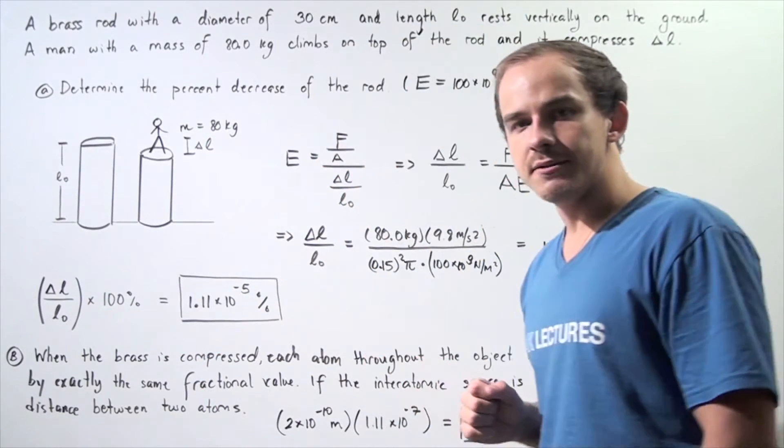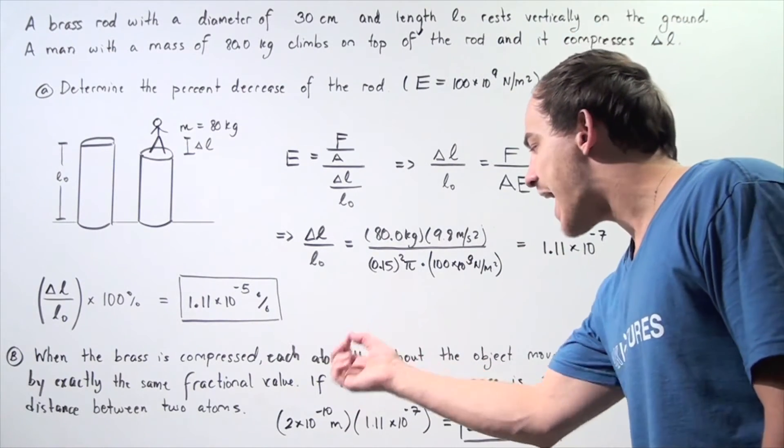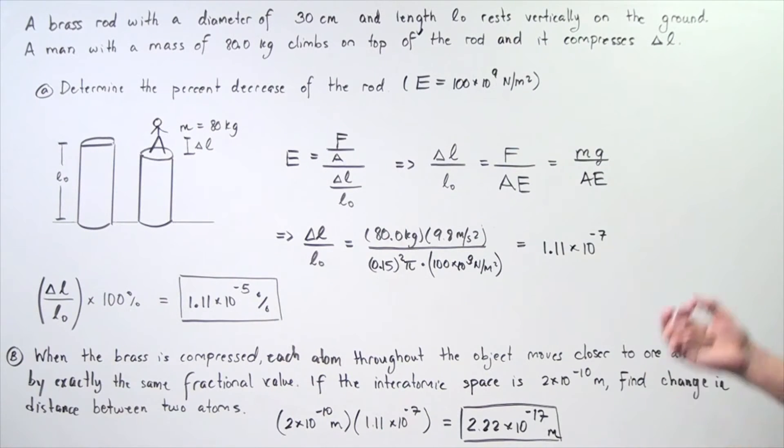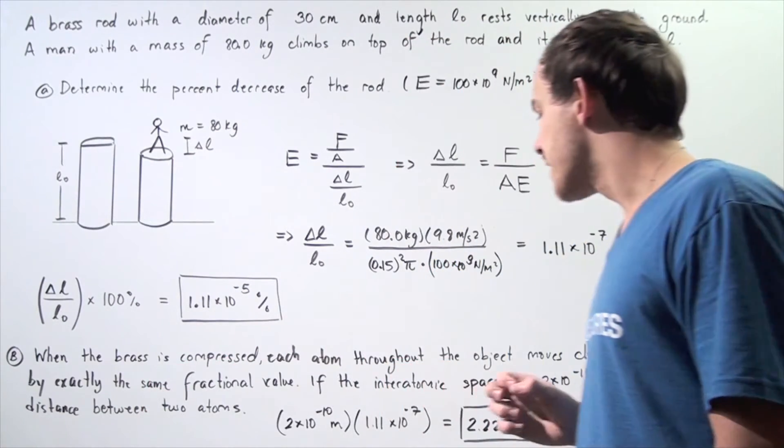Now, let's move to part B. When the brass is compressed, each atom throughout the object, throughout the brass rod, moves closer to one another by exactly the same fractional value.